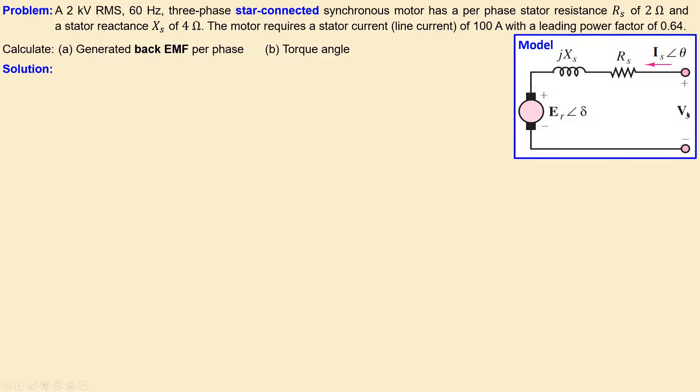This is the phase voltage, and the current flows through the stator. We have the stator resistance, the stator reactance, and the back EMF shown here with its own torque angle delta.